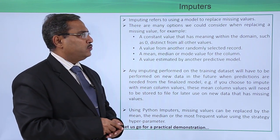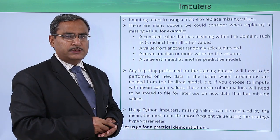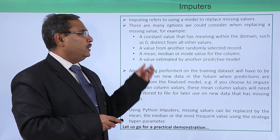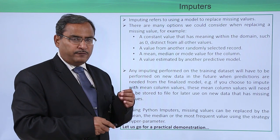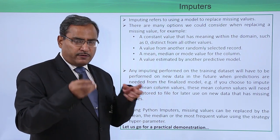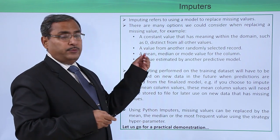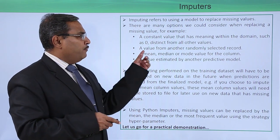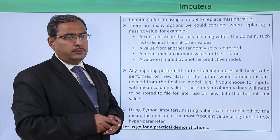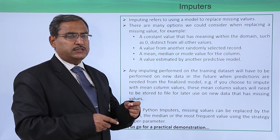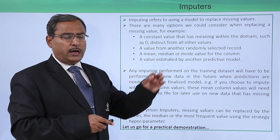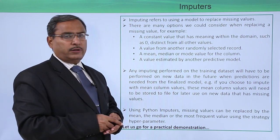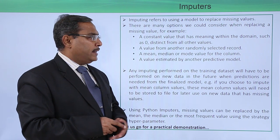There are many options we could consider when replacing a missing value. One example is a constant value that has meaning within the domain, such as 0, which is distinct from all other values. Depending on the domain, we can select 0 for a numeric domain. We can also select a value from another randomly selected record — picking the respective attribute value from that record. Other options include a mean, median, or mode value for the column, or a value estimated by another predictive model.